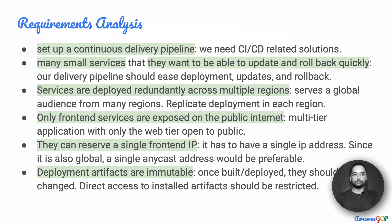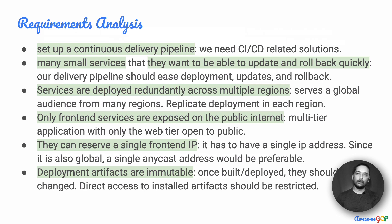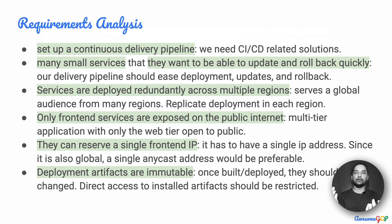Deployment artifacts are immutable, which means that once built or deployed, they should not be changed. There should not be direct access to these installed artifacts after deployment — people shouldn't have the chance to go update a script that is running in production. Moreover, when something is built and tagged with a particular version, you shouldn't be able to update that version but retain the same tag, which means it would look like two different functionalities for the very same tag version. So deployment artifacts have to be immutable.